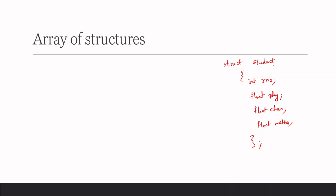We have a structure with the name student, and student has four members: roll number, physics mark, chemistry mark, and maths mark. In the last example, we defined a single structure variable, say A. But in a normal case, if I want to get the marks of all the first year students, the number of students will be very high. So we cannot give individual variable names like A, B, C, D, etc. There we need an array.